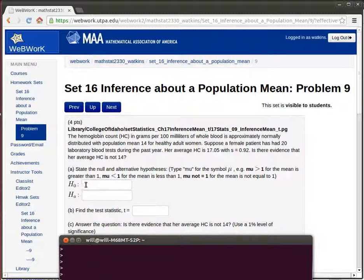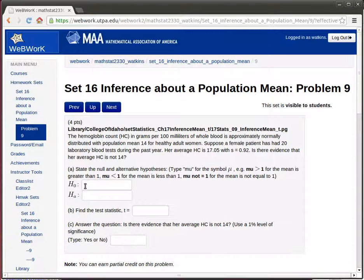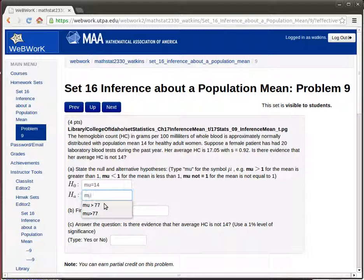So in this case then, the null hypothesis is as it always is, mu is equal to something, in this case 14. The question is, is she the same as the population mean or not? And we want the alternative hypothesis, mu is not equal to 14 in this case. So this is going to be a two tailed test.